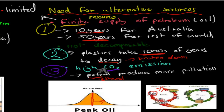With biomass — cellulose being one example of an alternative source — we can grow it, use it, and much of what we've used will go back, because trees absorb CO2. So with biomass it's a cycle, whereas with fossil fuels it's a one-way process: we mine or harvest it, burn it, and it ends up in the atmosphere. With biomass it's more of a complete circle.